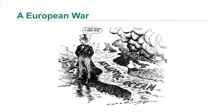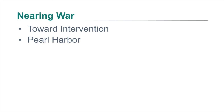In this 1940 cartoon, war clouds engulf Europe while Uncle Sam observes that the Atlantic Ocean no longer seems to shield the United States from involvement. Though Roosevelt considered Hitler a direct threat to the United States, most Americans simply wanted to avoid war. After a fierce debate in 1940, Congress approved plans for military rearmament and agreed to sell arms to Britain on a cash-and-carry basis — Britain would pay in cash and transport them in British ships. But Roosevelt, mindful of a presidential election, went no further.